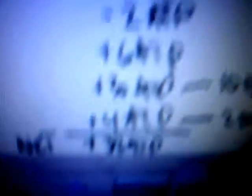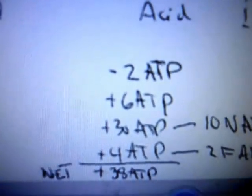And then we have four ATPs we gained from the two FADHs up in the succinic dehydrogenation, which is a net of 38, because 30 plus 6 plus 4 is 40 minus 2, 38. And there you have it, cellular respiration all in one.